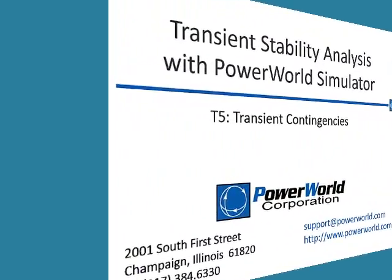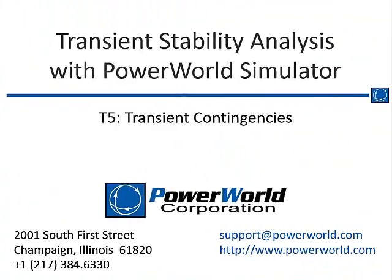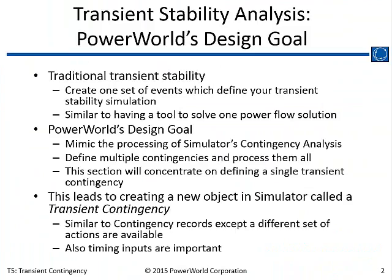The next section we're going to talk about is Section 5, Transient Contingencies, and some of the examples that Tom has gone through. We've touched on this a little bit, but we'll go through this to show you what's there and how you go about defining a transient contingency.